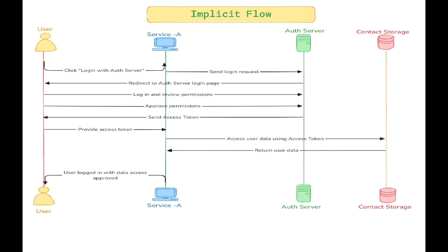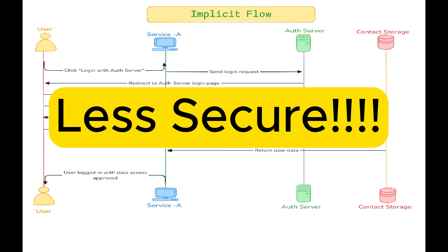The implicit flow is mainly for single-page applications that run entirely in your browser. They do not have a backend server to handle the usual step of exchanging an authorization code. The client sends the user to the authorization server — it can be Google, Facebook, or any other provider. The user logs in and gives permission to the application. In implicit flow, instead of getting an authorization code first, the client skips this step and gets the access token directly in the URL. The app can then use this access token to access the user data from the resource server. But it is not very secure because the token is exposed to the browser, making it more vulnerable to attacks.